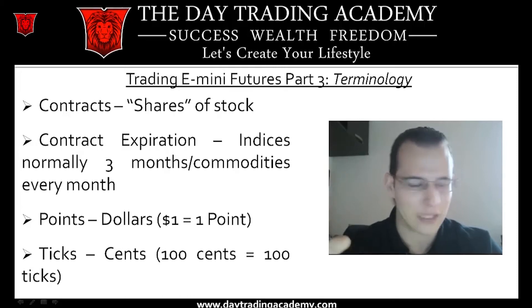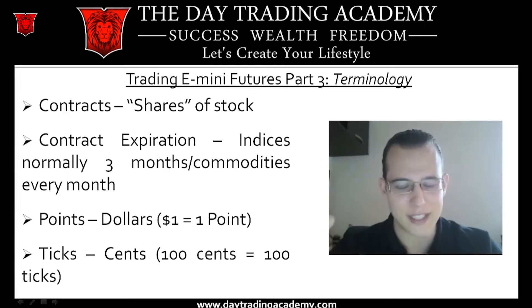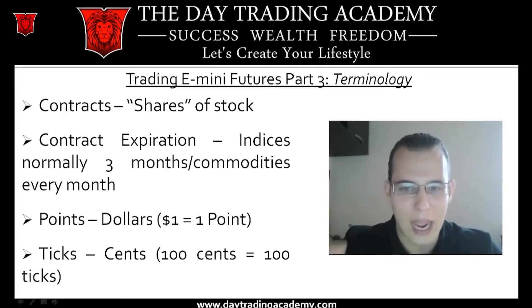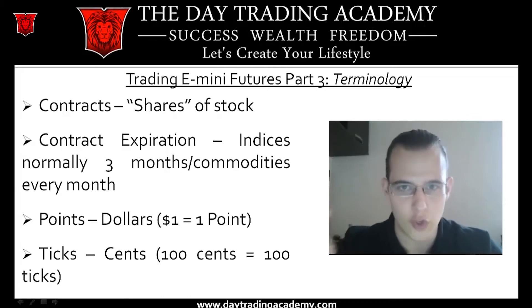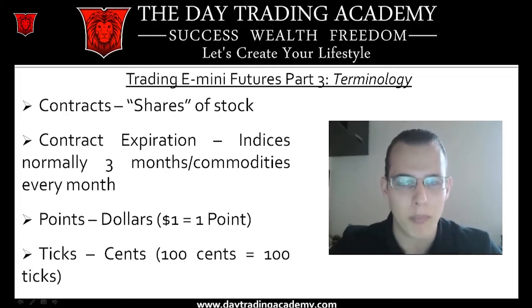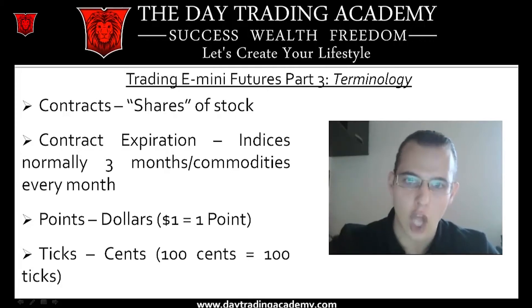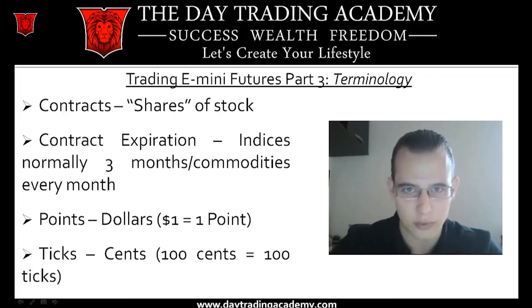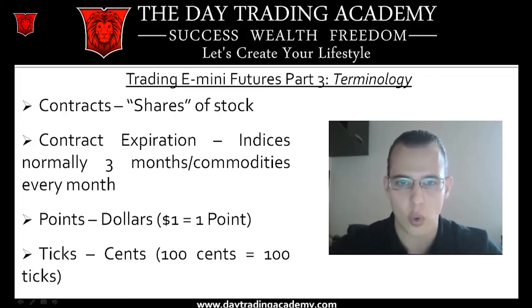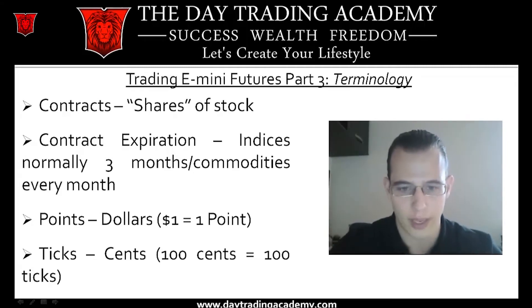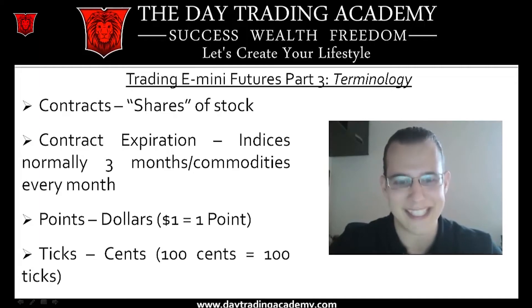Generally, the indices expire every three months and the commodities expire every month. In terms of leverage, it's one of the advantages of trading futures — it's much higher leverage in that we can make a lot more money with less. Every dollar that the futures market moves is between $50 to $5,000. When we say 'points,' we mean dollars, and when we say 'ticks,' we mean cents.